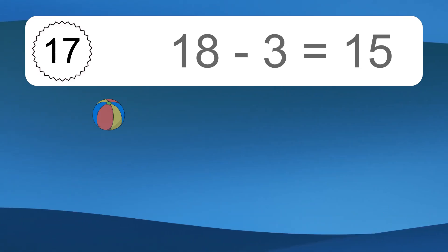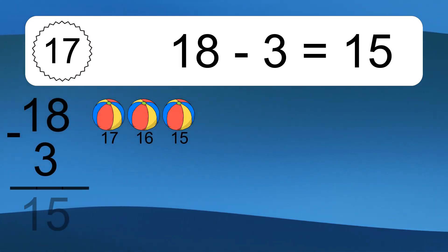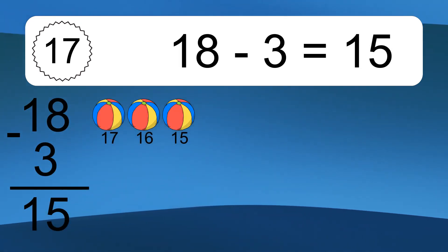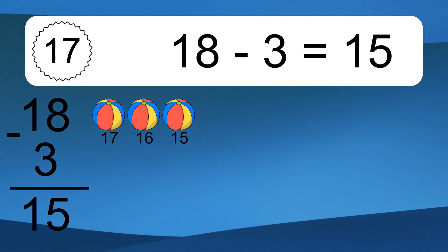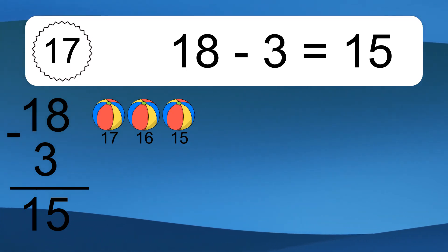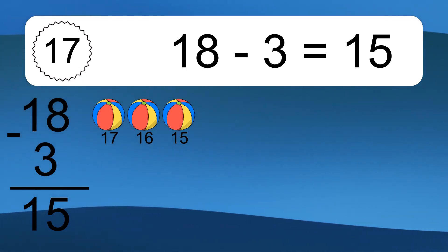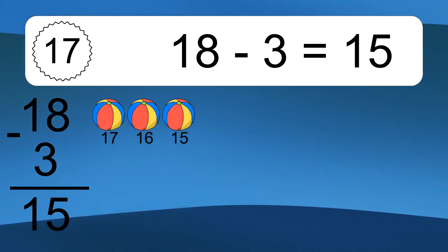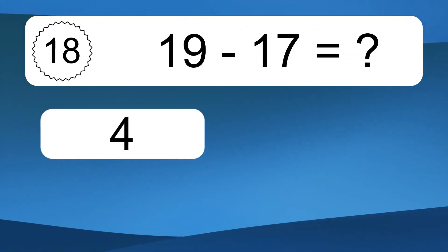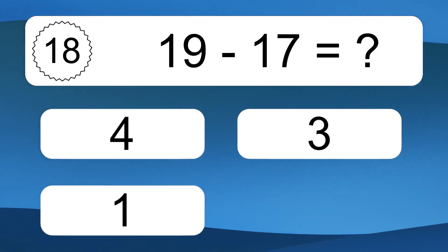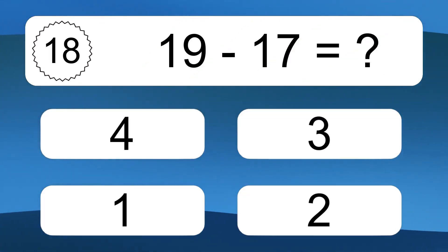18 minus 3 equals what? 18 minus 3 equals 15. Let's count it: 17, 16, 15.